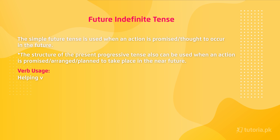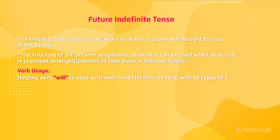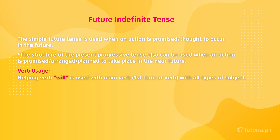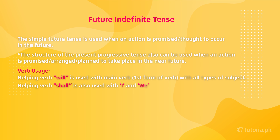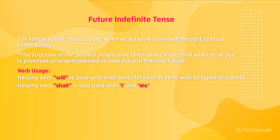For verb usage: the helping verb 'will' is used with the main verb, and the main verb is always in its first form. 'Will' is used with all types of subjects. 'Shall' can also be used with 'I' and 'we', but it is not a hard and fast rule — 'will' also works with 'I' and 'we'. For negatives, add 'not' after 'will' or 'shall', e.g., 'I will not go to school.'